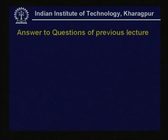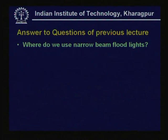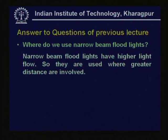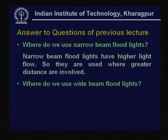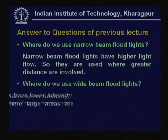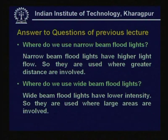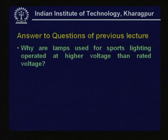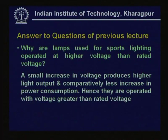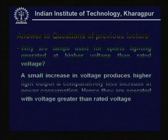Addressing questions from the previous lesson: Narrow beam floodlights have higher intensity and are used where large areas are involved and the mounting height is high. Wide beam floodlights have lower intensity and are used where large areas are involved at lower mounting heights. Lamps for sports lighting operate at higher than rated voltage because a small increase in voltage produces higher light output with comparatively less increase in power consumption, making slightly over-voltage operation beneficial for sports applications.